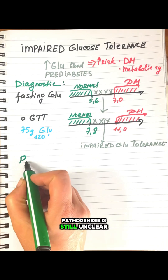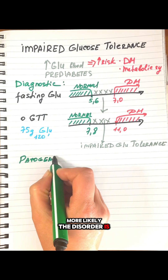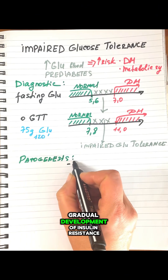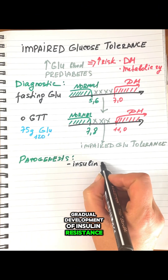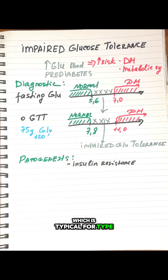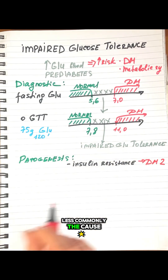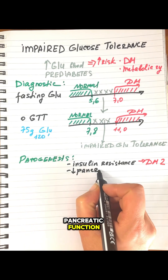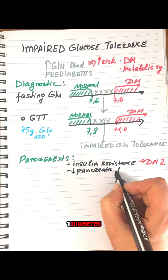The pathogenesis is still unclear. Most likely the disorder is associated with the gradual development of insulin resistance, which is typical for type 2 diabetes. Less commonly, the cause is a gradual decline of pancreatic function and development of type 1 diabetes.